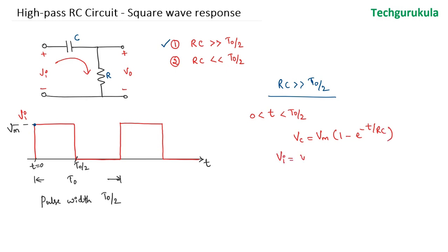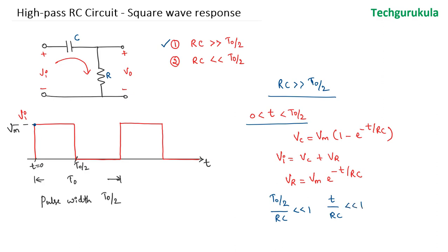The input voltage is equal to Vc plus Vr, so we can write Vr is equal to Vm times e to the power minus T over RC. Now, since RC is very, very greater than T0 by 2, T0 by 2 over RC will be very, very small compared to 1, and T over RC will be even smaller. We can therefore write the voltage across the resistor as Vm times (1 minus T over RC), which means the output voltage decreases linearly with time.